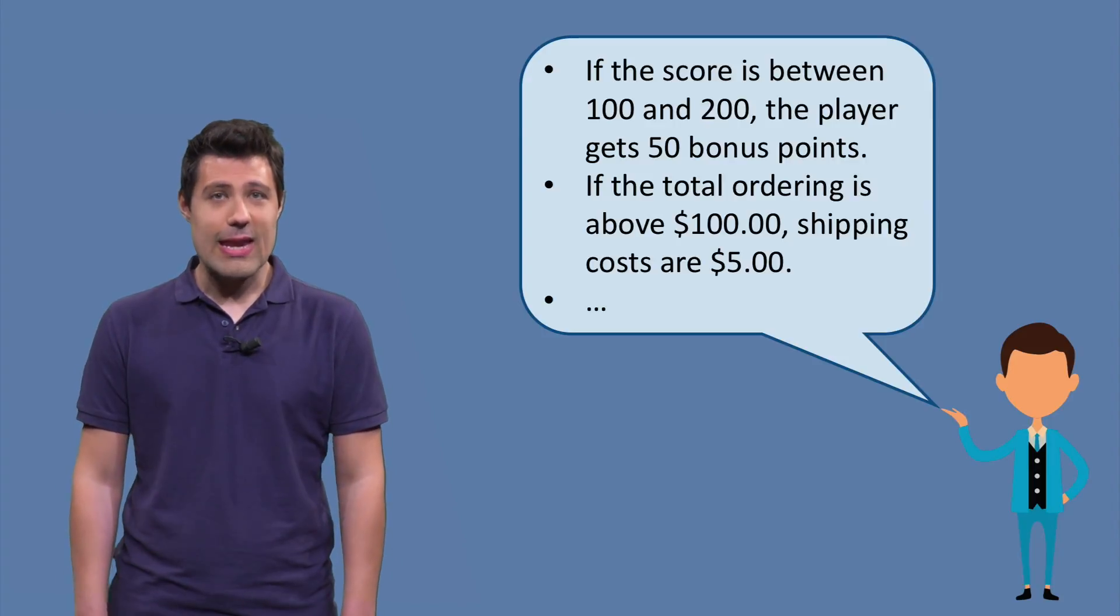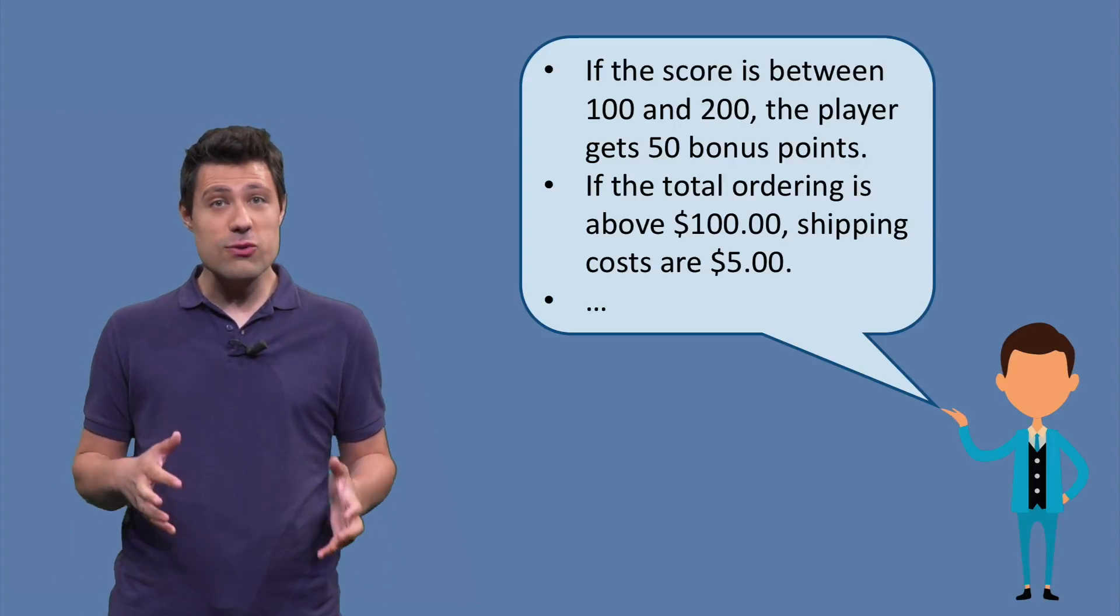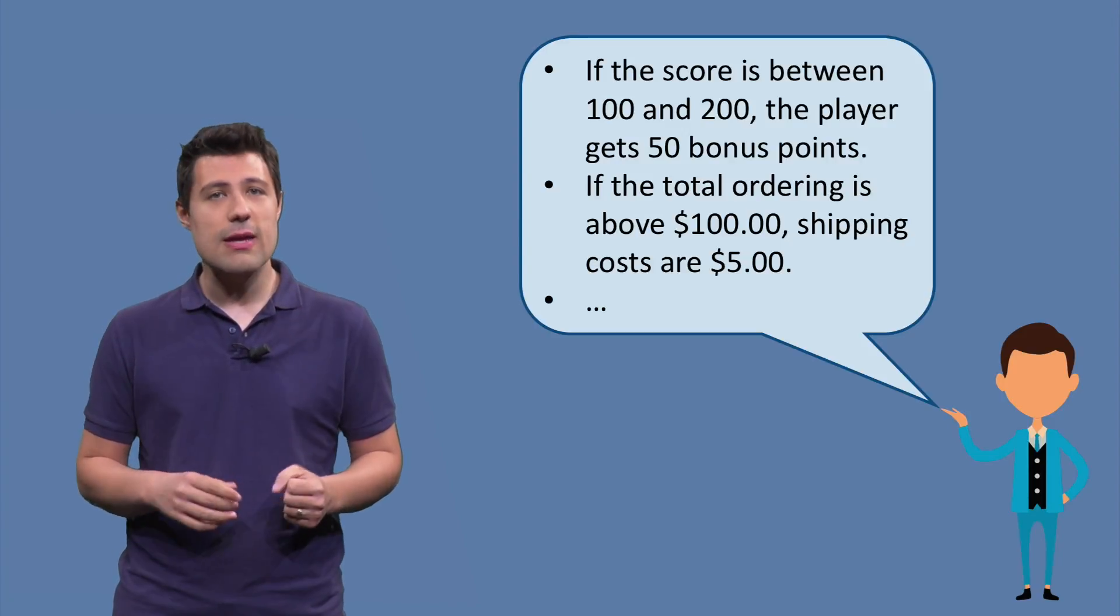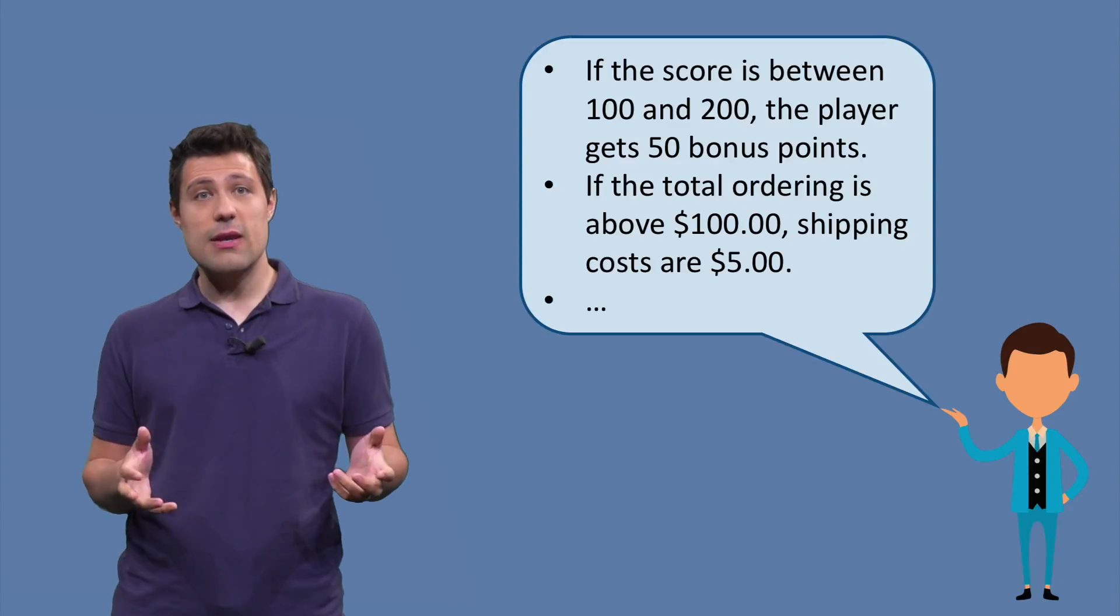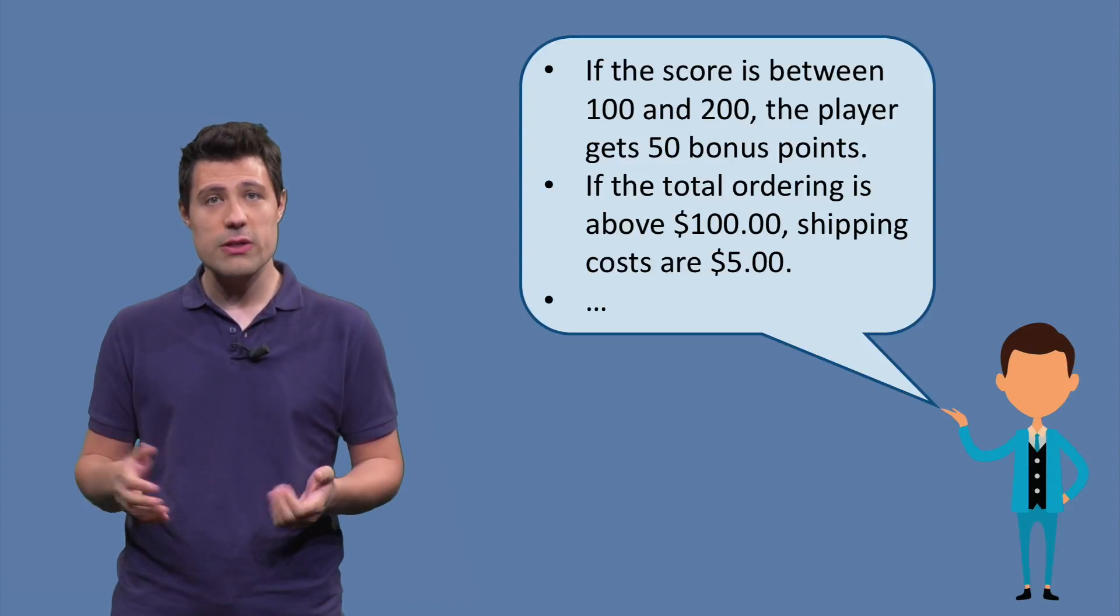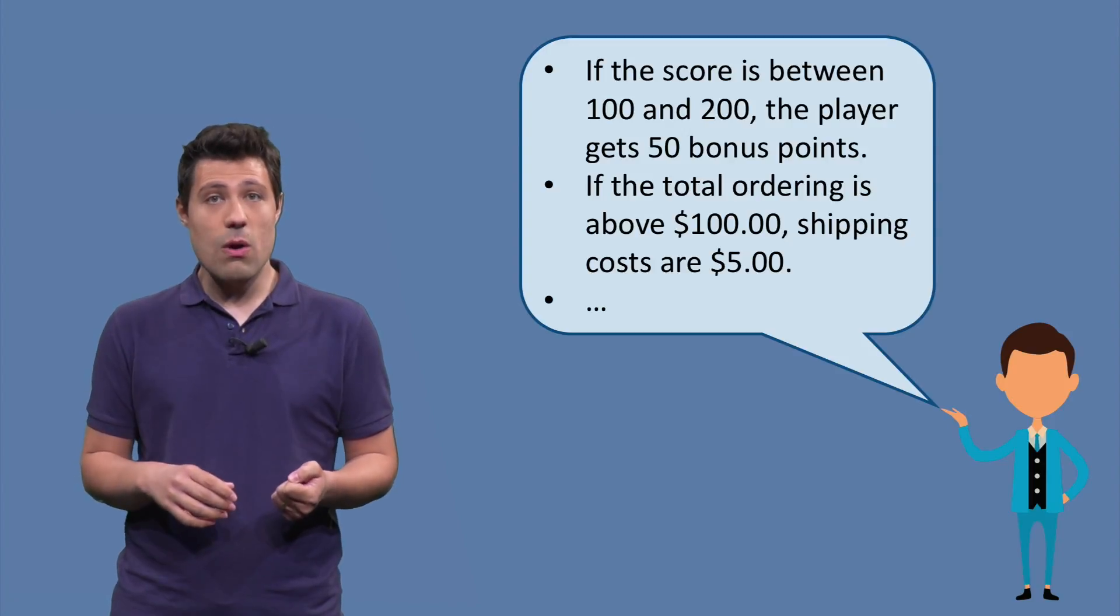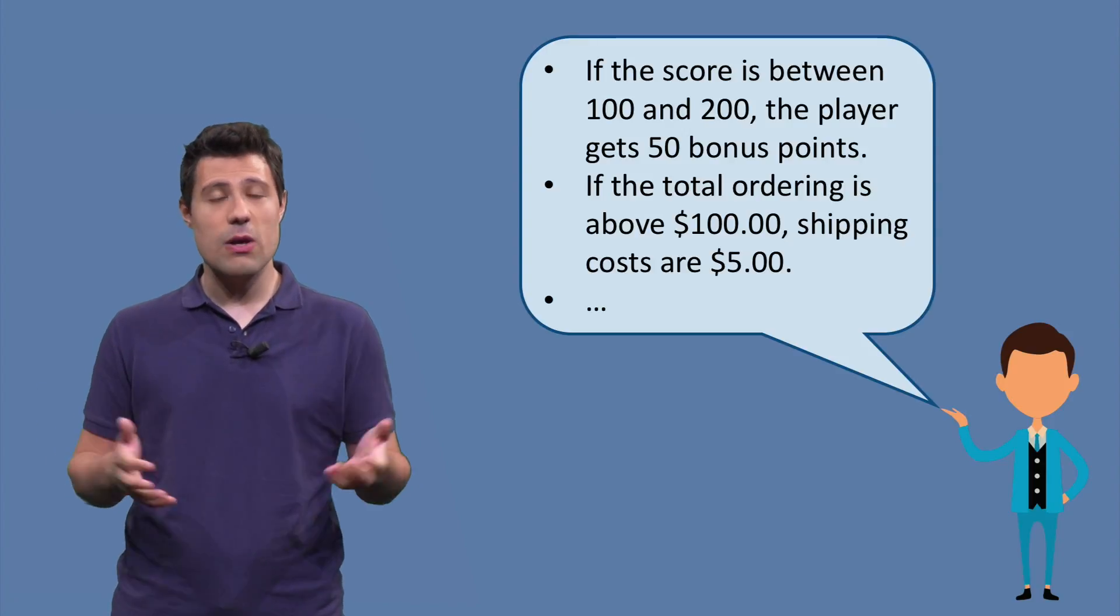Boundaries are everywhere, and in practice you're gonna have to handle several requirements with boundary conditions. For example, if you're building a game, you'll have a requirement like if the score is between 100 and 200, the player should get 50 bonus points. Or if the total ordering is above 100, shipping costs are $5.